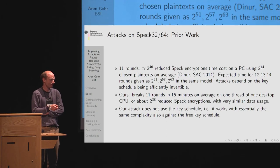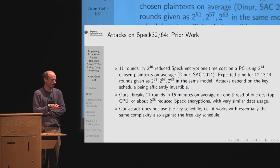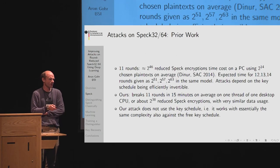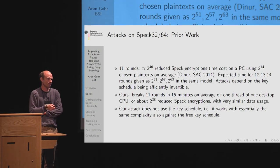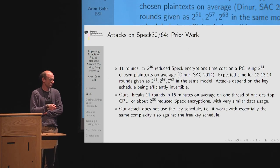Our attack breaks 11 rounds in roughly 15 minutes on average on one thread of a normal desktop computer, which is roughly equivalent to about 2^38 reduced SPECK encryptions. This represents one point on a data–time trade-off among many — if we used more data, we could build faster attacks, roughly 10 to 20 times faster. With these settings, the attack is comparable in data complexity to the best known attacks, making it nicely comparable to the literature.